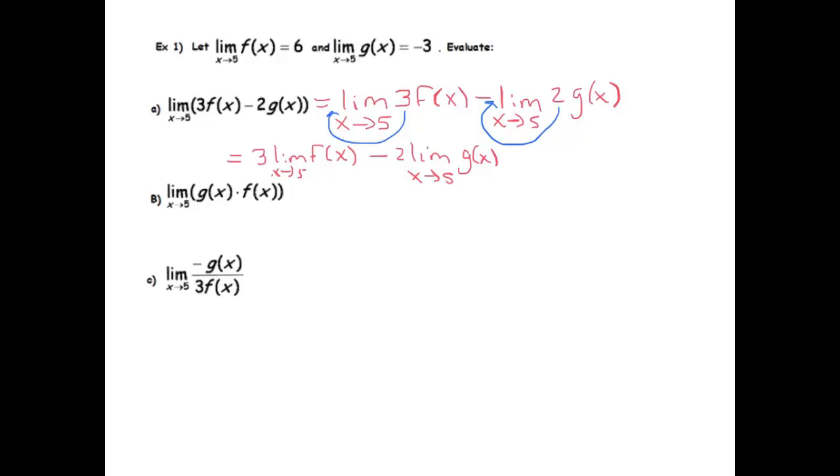And now we're almost done. We just need to substitute in these values. Do we know what this is? Yes, we do. And do we know what this is? Yes, we do. So the first box is the limit as x goes to 5 of f(x), which is 6. So this is equal to 3 times 6 minus 2 times negative 3, which equals 18 plus 6, which is 24.